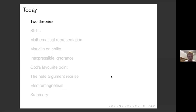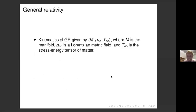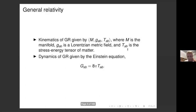Let's start off with two theories. The kinematics of general relativity are given by three objects: M, G, and T — where M is the manifold, G is the Lorentzian metric field on the manifold, and T is the stress-energy tensor associated with matter. The dynamics of this theory are given by the Einstein equation. That's all we need as background to general relativity.